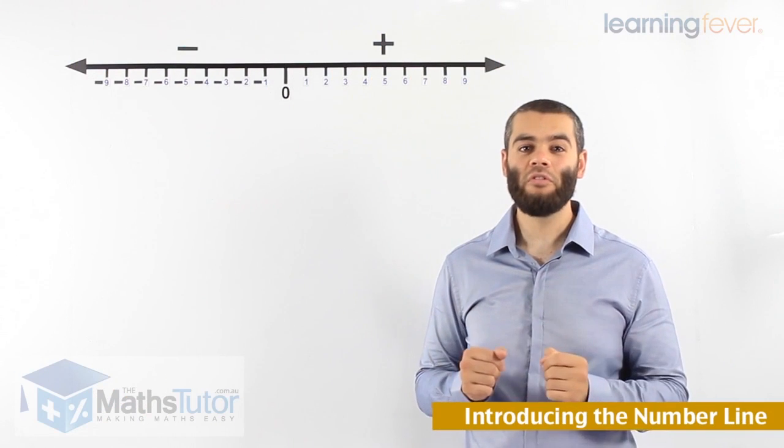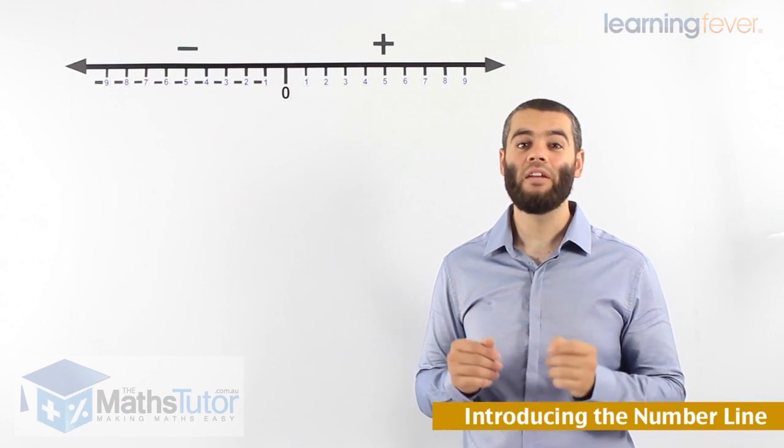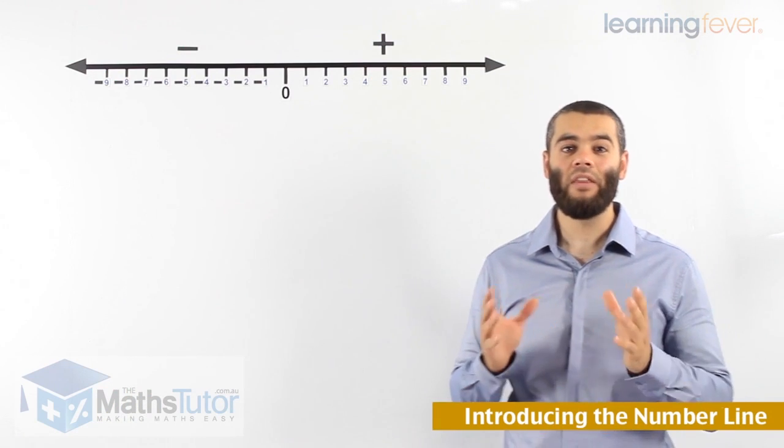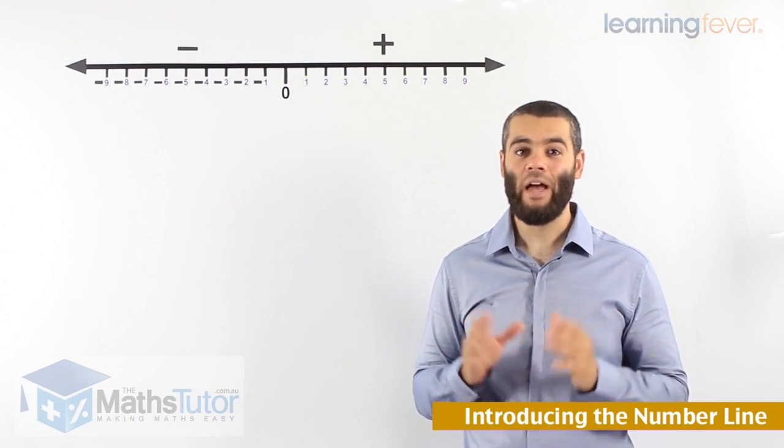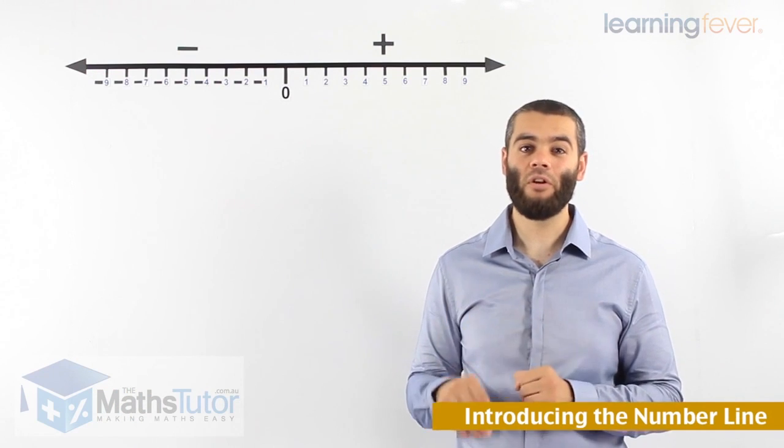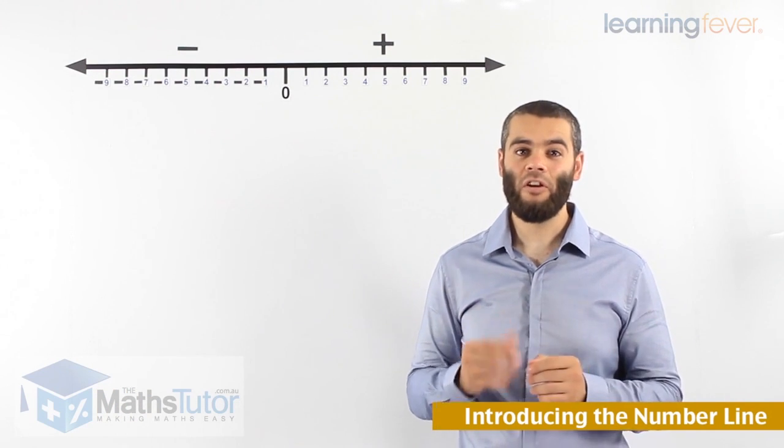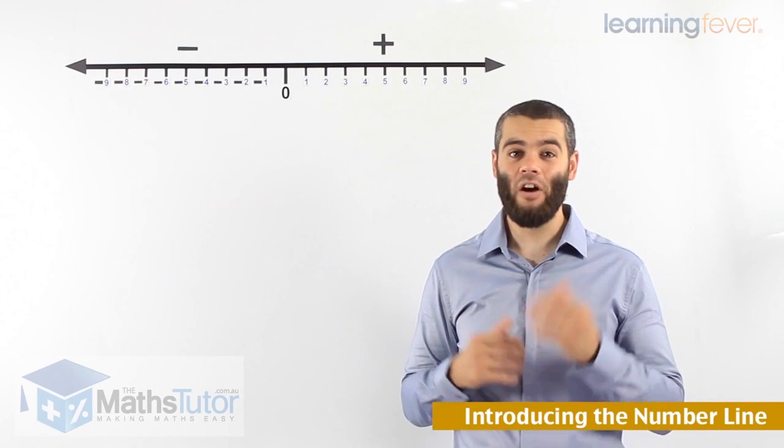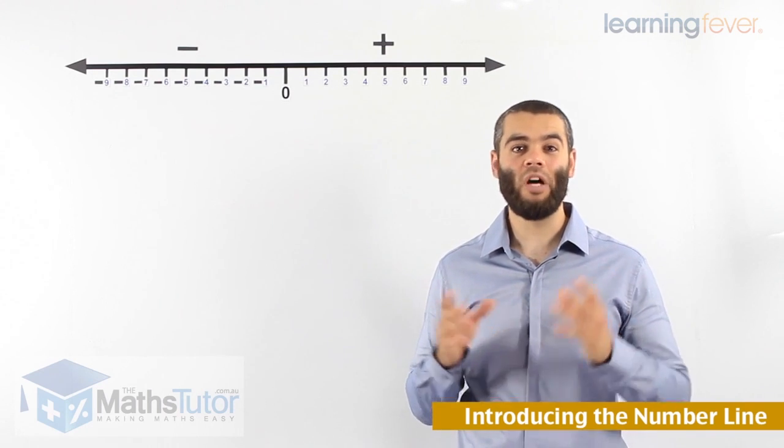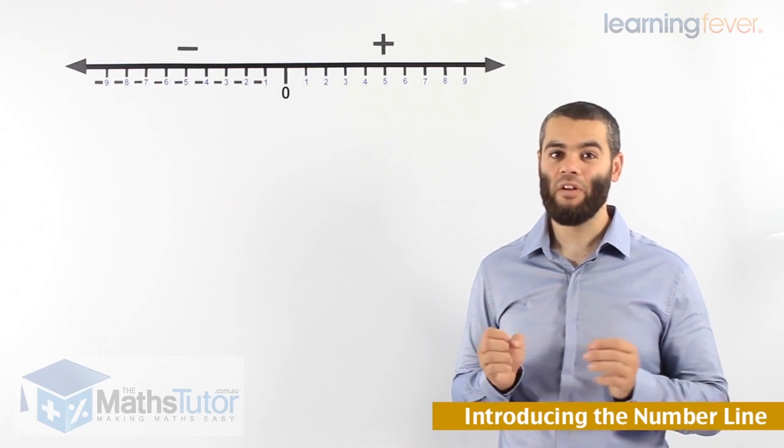Throughout primary school, we were introduced and we learned about the number line, and we realized that the number line ended at zero. However, in high school, we're going to notice that the number line does not end at zero. It actually extends, and to the left-hand side of the number line, we have what we call directed or negative numbers.